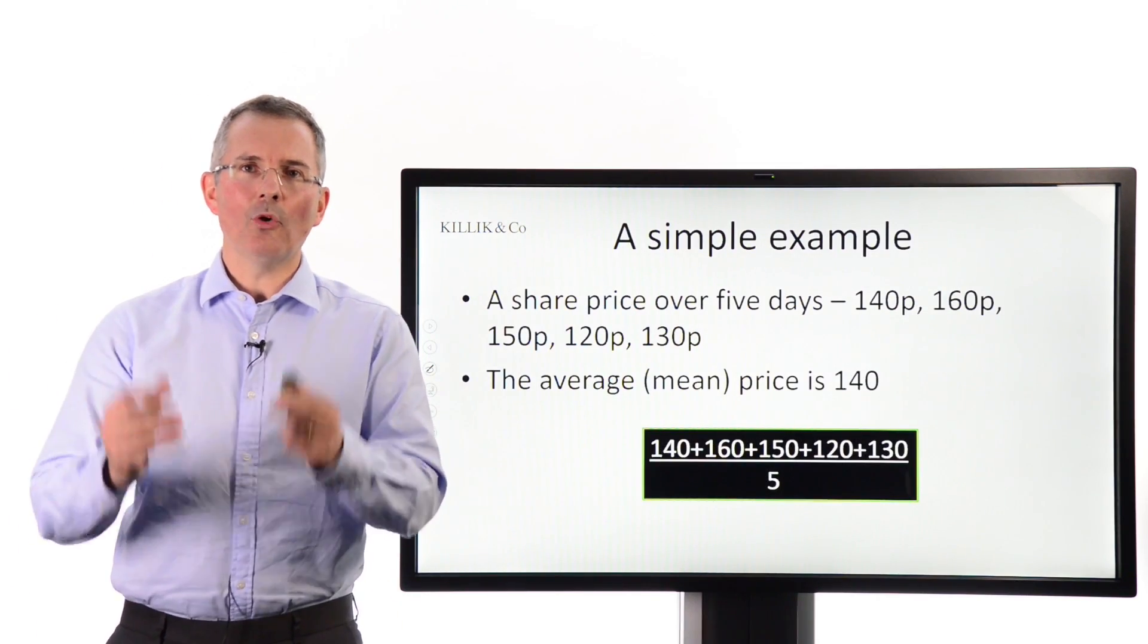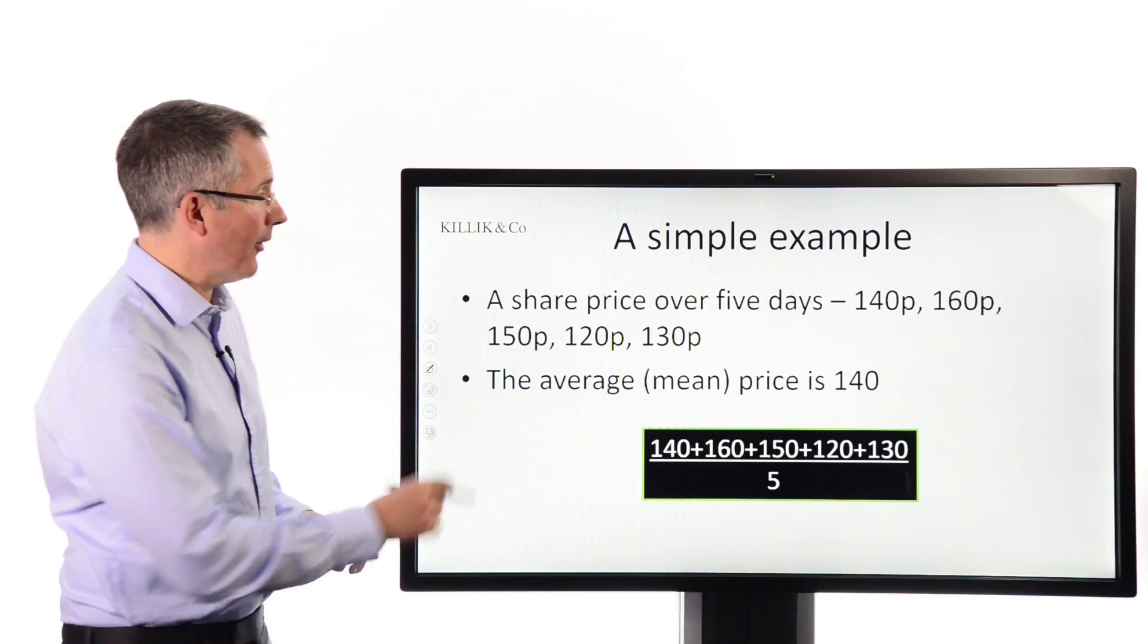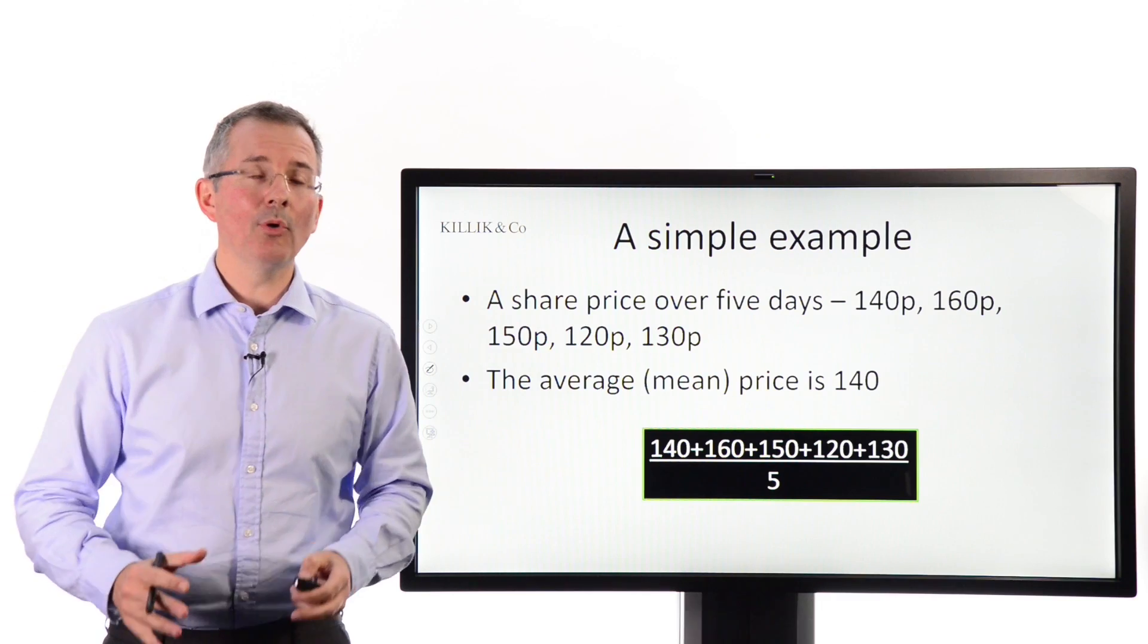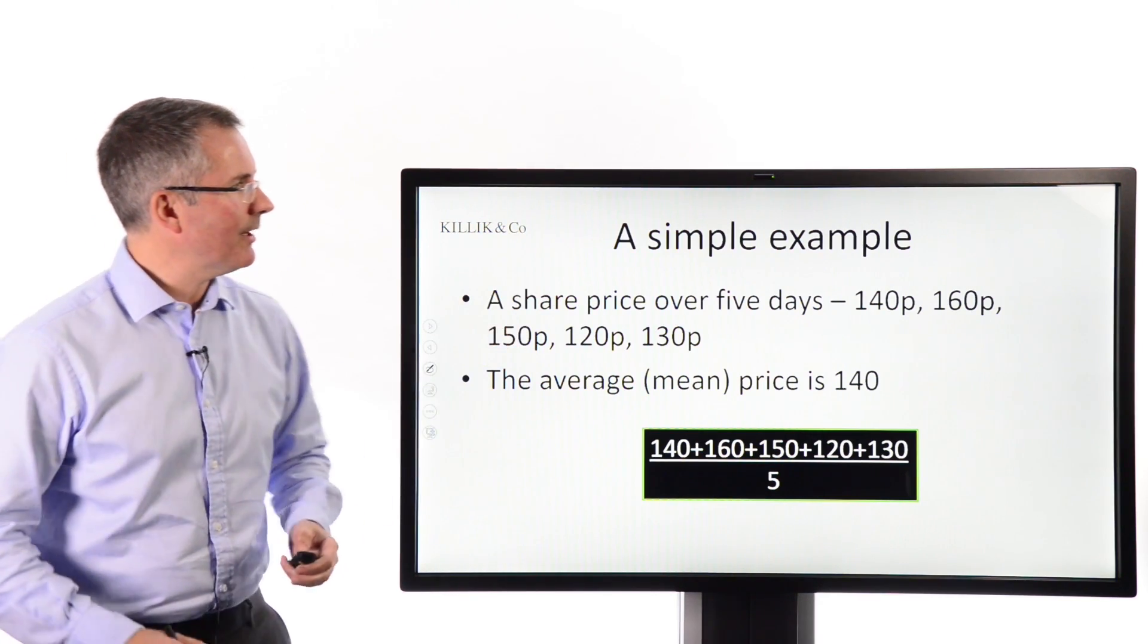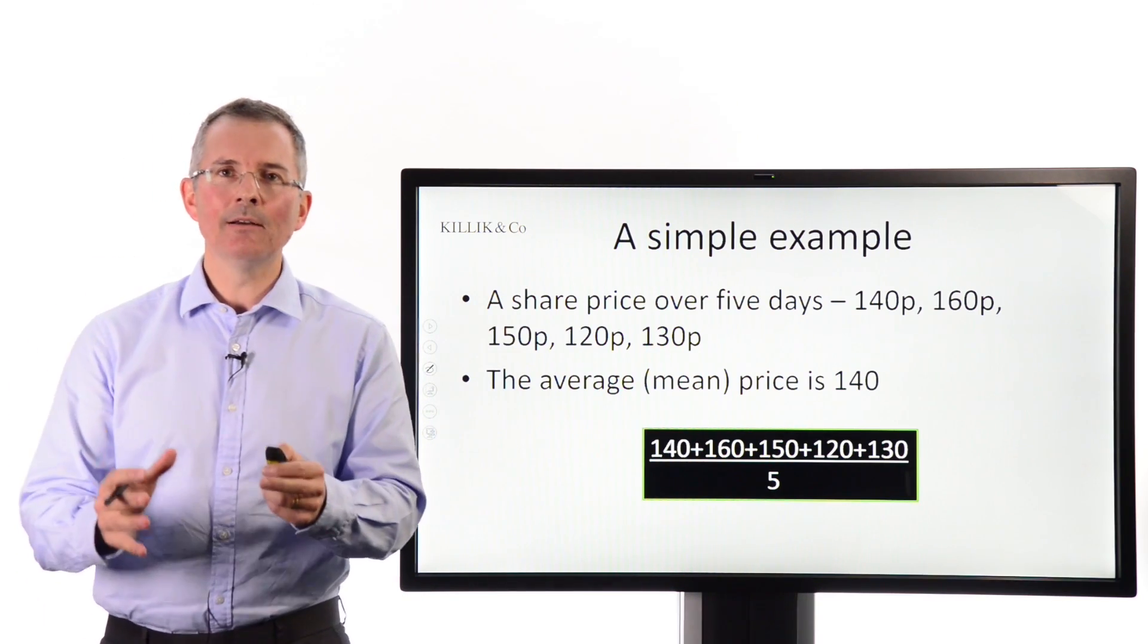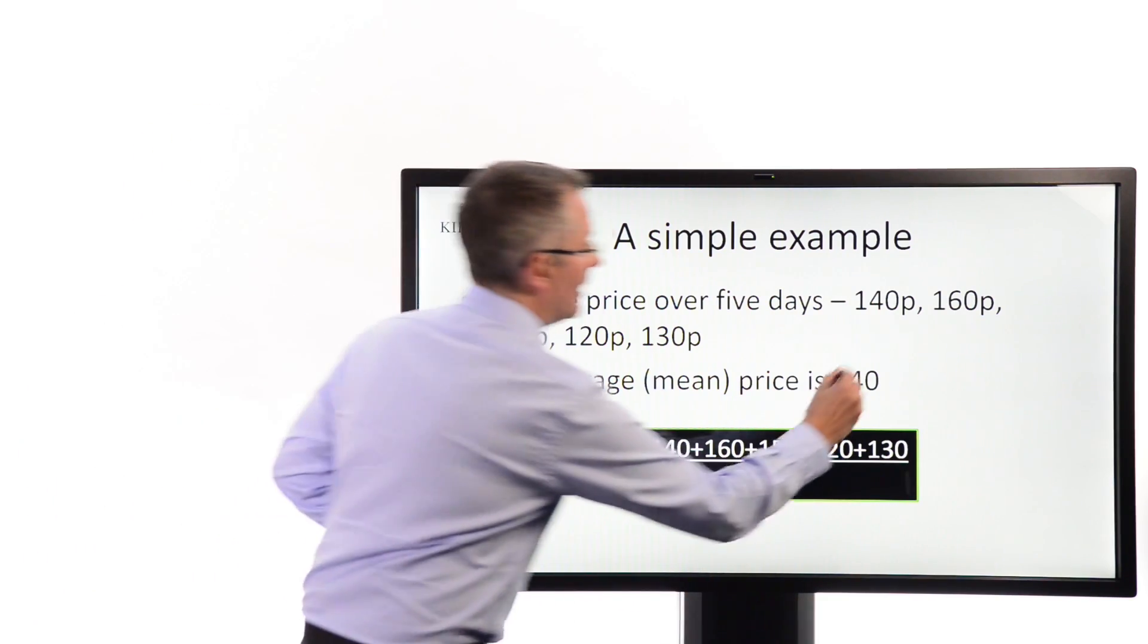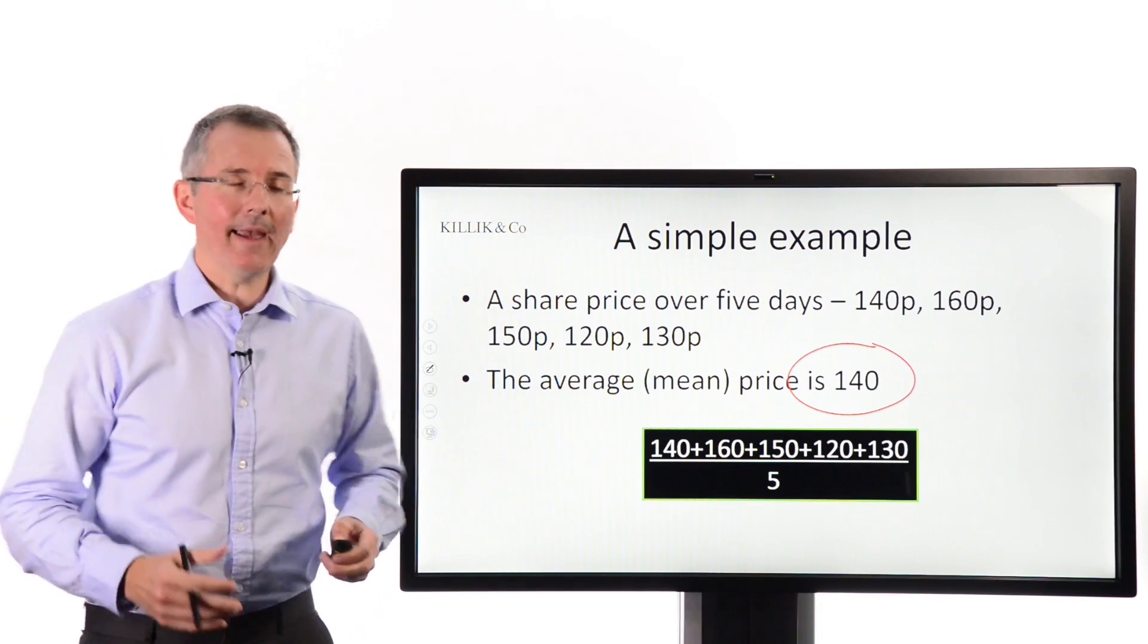So a simple example. First of all, let's get an average. We can't ask ourselves the question, how far is something from an average unless we've got an average. So share price over five days. That's a very simple example. Just five days, just five share prices. And you might think, all this effort, just to tell me that. Well this is a very small example. What I'm suggesting here can be applied to much bigger examples, much more complex scenarios. So share price over five days, ranging through £1.40 as a starting position, £1.60, £1.50, £1.20, £1.30. Now a simple mean, there are different ways to do averages, but a simple mean is the one we want here, is all of those divided by the number of them there are. So add them all up and divide by five and you get £1.40. Now you might be saying, well I didn't need a rocket scientist to tell me that. But that is where you get the mean from.